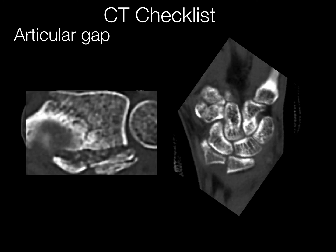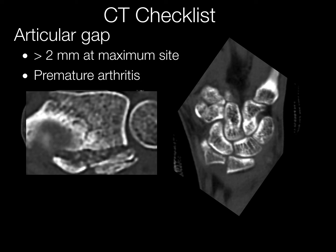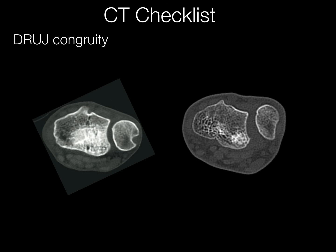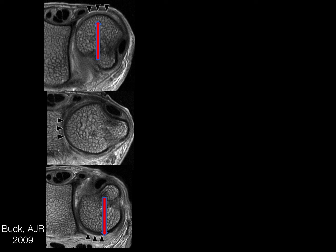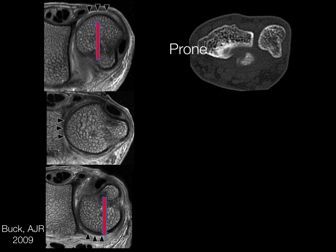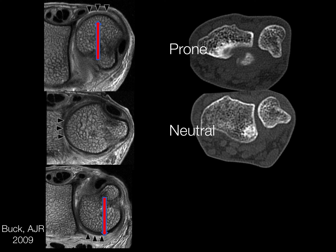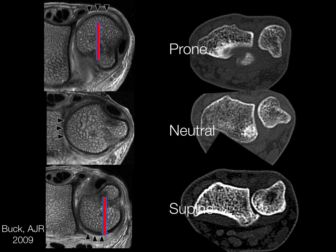The articular gap is also important to mention — two millimeters is the threshold. We want to know if it's greater than two millimeters at the maximum site, which is thought to contribute to premature arthritis. We can use CT to determine DRUJ congruity, though the joint is not truly congruent. The relationship also changes based on the positioning of the wrist during the examination. Here's the CT in prone showing the ECU groove extending medially, in neutral heading up, and in supine the groove is more towards the dorsal and radial side.